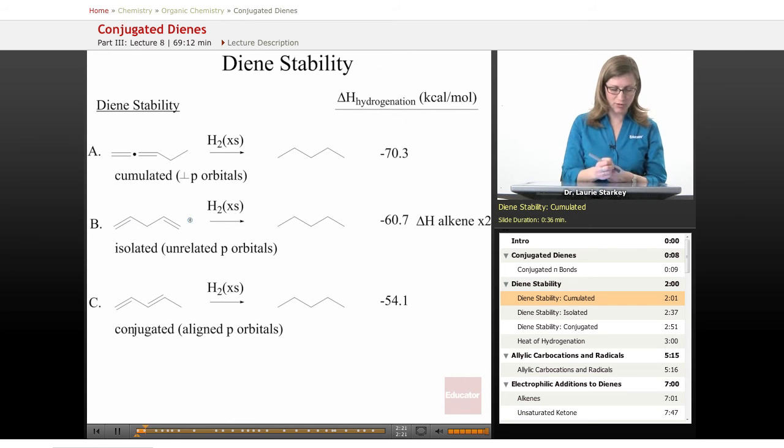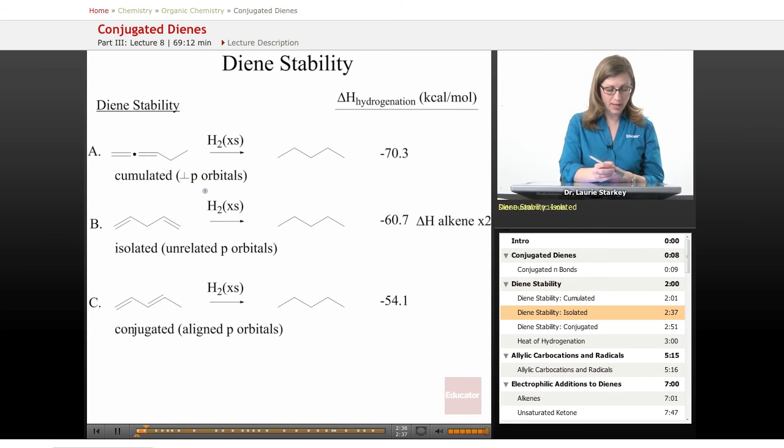These have five carbons, so these are all pentadiene examples. Here, the two double bonds are right on top of each other. We call this a cumulated pi diene where the p orbitals are perpendicular - the ones on this carbon for this pi bond are perpendicular to the ones for the second pi bond.